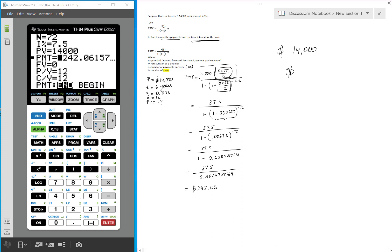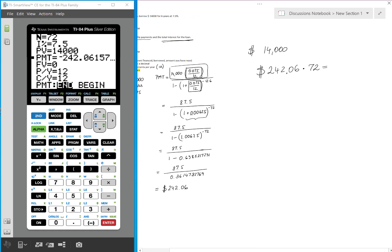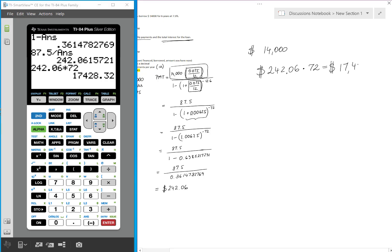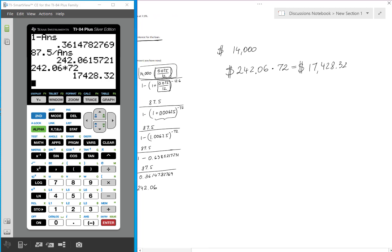But we borrow them with some interest. So when we pay 242.06 per month for 6 years, it means we pay this amount 72 times. Right? 6 years times once a month. So 6 times 12. It's 72.